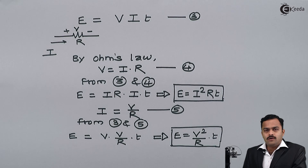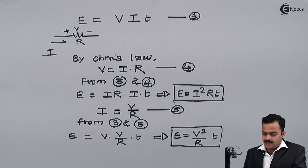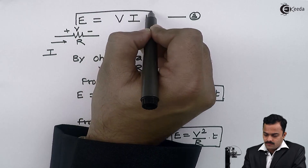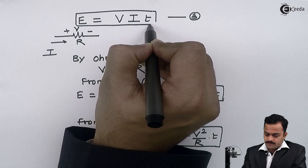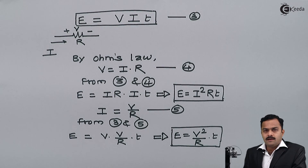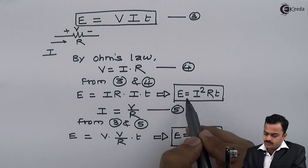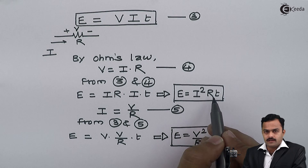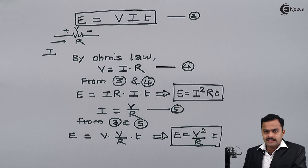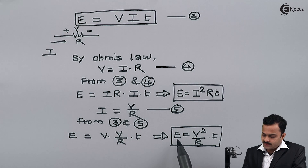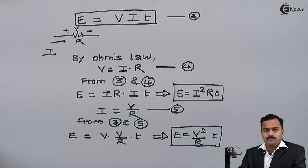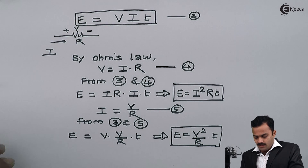So if I know voltage, current, and the amount of time for which current is passing, I can use E equals VIT. If I know current, resistance, and time, I can use E equals I²RT. And if I know voltage, resistance, and time, I can use E equals V²/R into T. It depends upon what parameters are known to us.